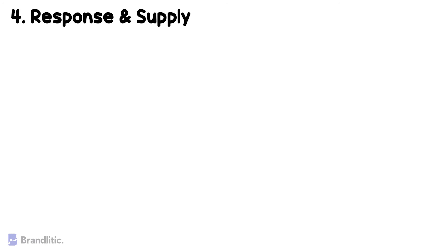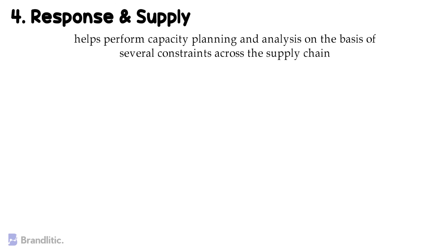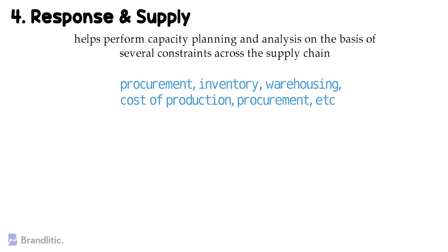The fourth component is Response and Supply. SAP IBP for response and supply helps to perform capacity planning and analysis on the basis of several financial constraints across the supply chain. It simulates planning and evaluates them on different scenarios, considering procurement, inventory, warehousing, cost of production, and procurement, etc.